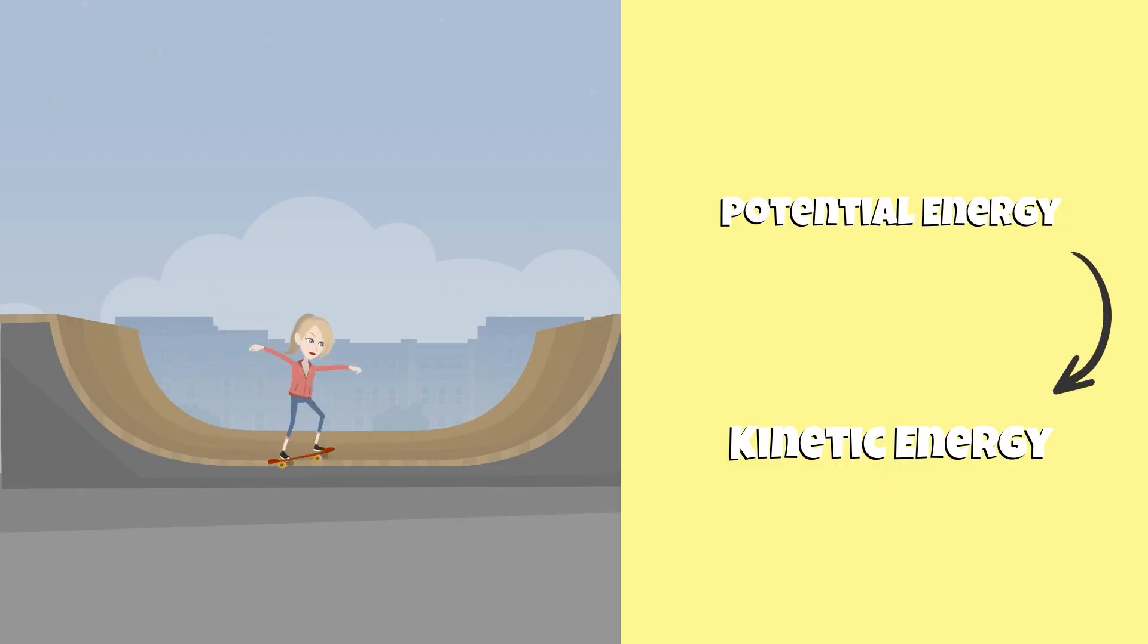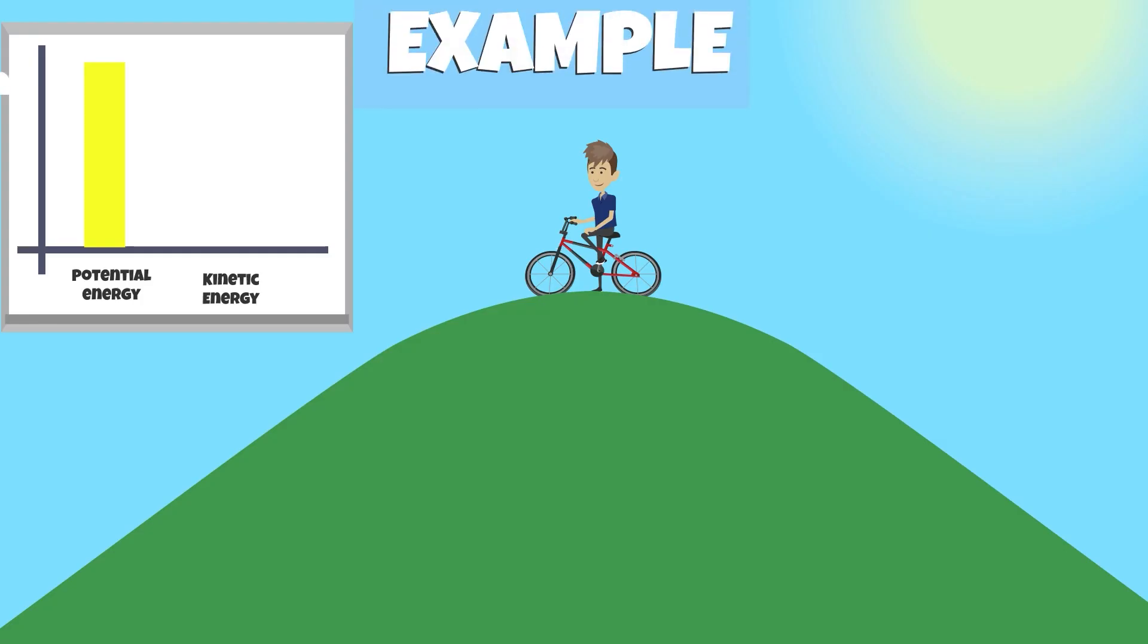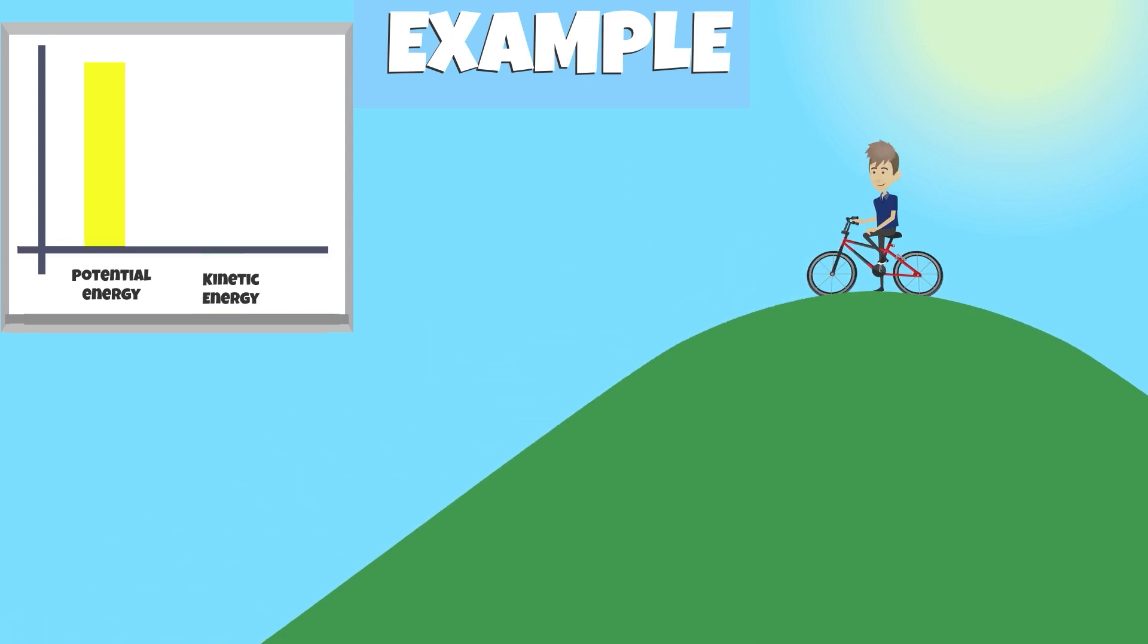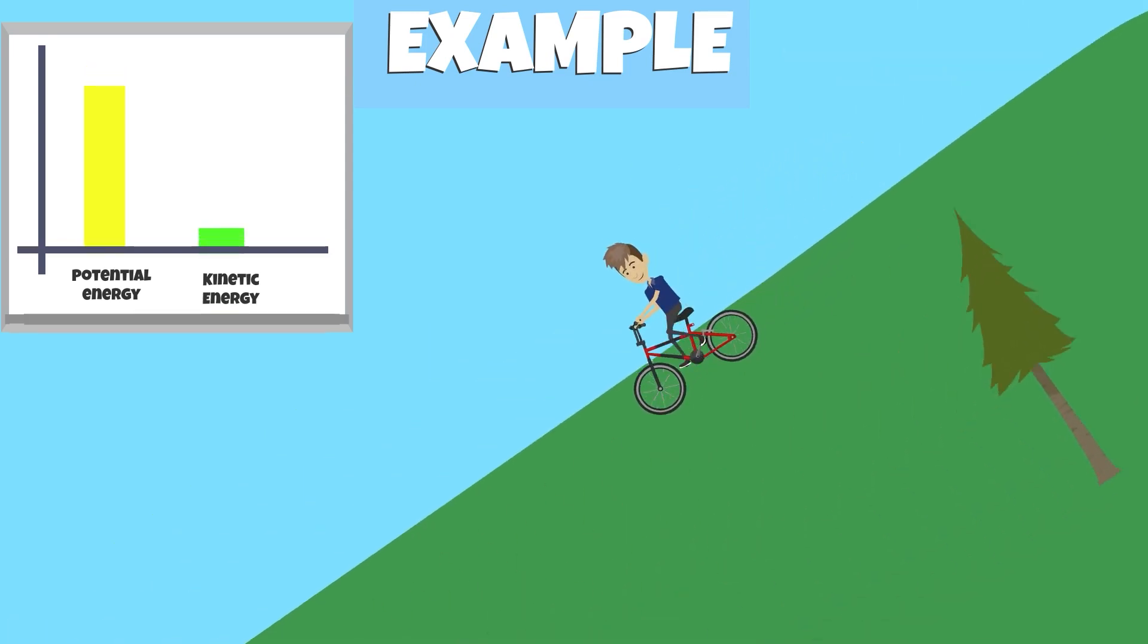Potential energy can transform into kinetic energy, and kinetic energy can also change into potential energy. For example, if you were to be at the top of a hill on a bicycle, you would have the greatest amount of potential energy, or energy that is stored. The minute you start to go down the hill, the stored energy is transformed to kinetic energy, or energy of movement, due to the force of gravity.